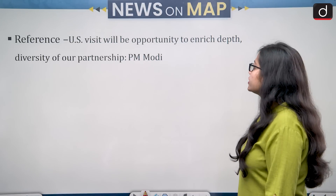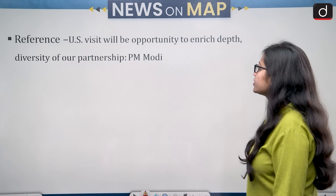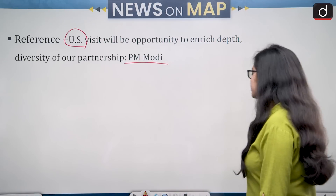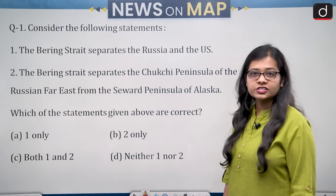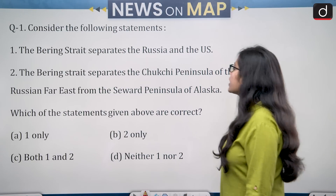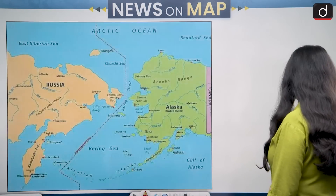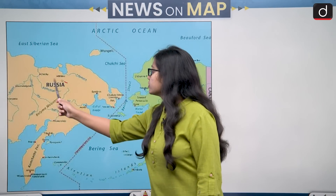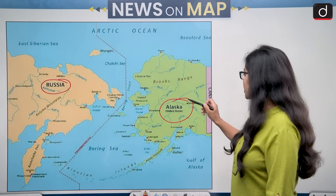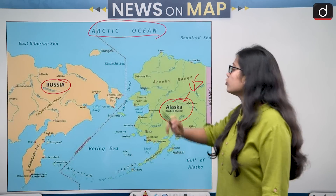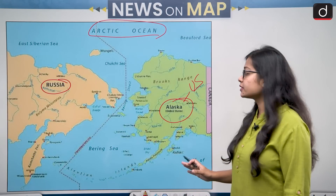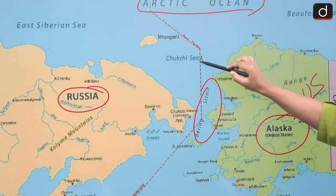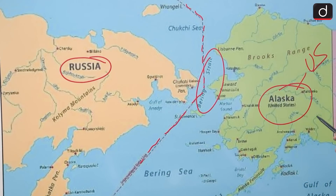The reference is that United States visit will be an opportunity to enrich the depth and diversity of our partnership. Prime Minister of India Narendra Modi is on a visit to the United States, and this is what brings the United States into the news. The first statement says the Bering Strait separates Russia and the US. Looking at the map of Russia and Alaska: on the western side is Russia, on the eastern side is Alaska, and the Bering Strait separates the Russian Far East from the United States Alaska.